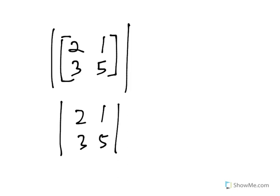For a two by two matrix, the way you calculate that number is very easy. You multiply the number on the top left by the number on the bottom right, and then you subtract the number on the bottom left times the number on the top right. So in this case, the determinant of 2, 1, 3, 5 is 10 minus 3, which is 7.